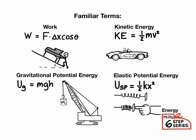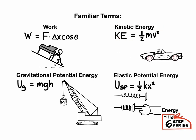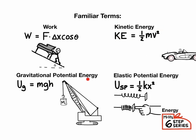Before we get started, you want to make sure that you're okay with all of these terms. Work is the transfer of energy from an applied force over a distance. Kinetic energy is energy due to motion. Gravitational potential energy is energy stored due to an object's ability to fall.